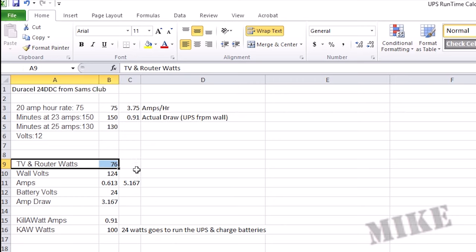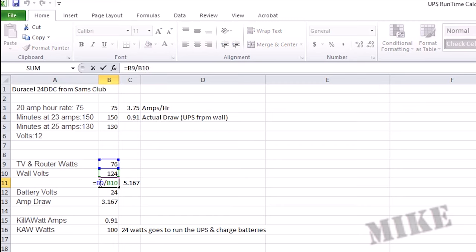The UPS is currently saying that it's putting out 76 watts to the router and the TV at 124 volts out of the wall. This corresponds to watts over volts, 613 milliamps, which seems about right.